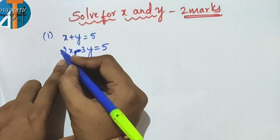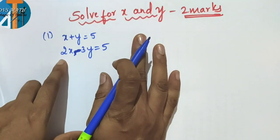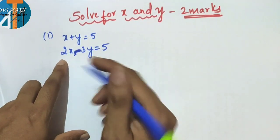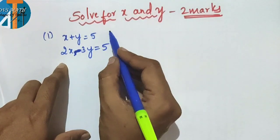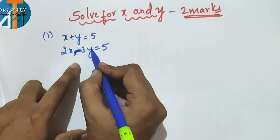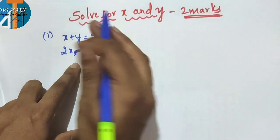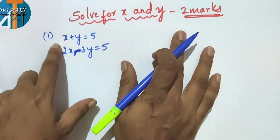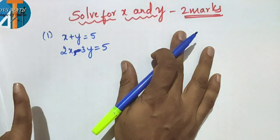You have to convert any one of the coefficients to be the same. You can either make the x coefficient the same or make the y coefficient the same. For example, to match x: multiply by 2; to match y: multiply by 3.